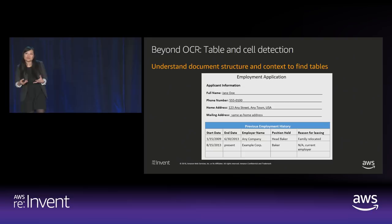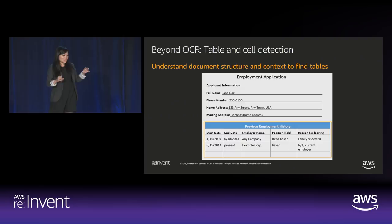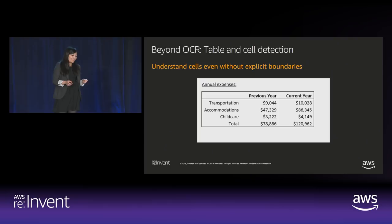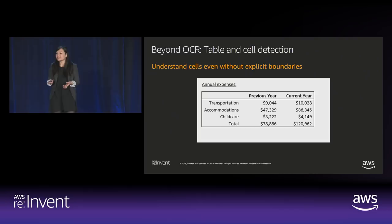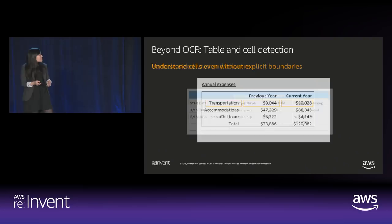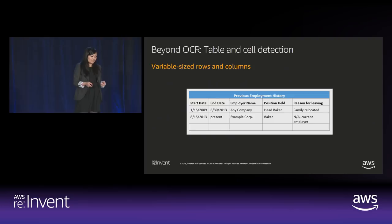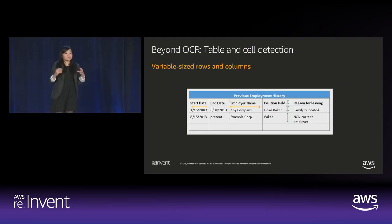Going back to tables — first we understand where the table is, then we understand whether something that looks like a table actually is one, versus just a column. We actually understand tables even when there aren't explicit grid lines, and we're able to identify those cells. Even when columns and rows have different sizes, we understand the entire context to recognize it as a table and correctly identify where the cells are.